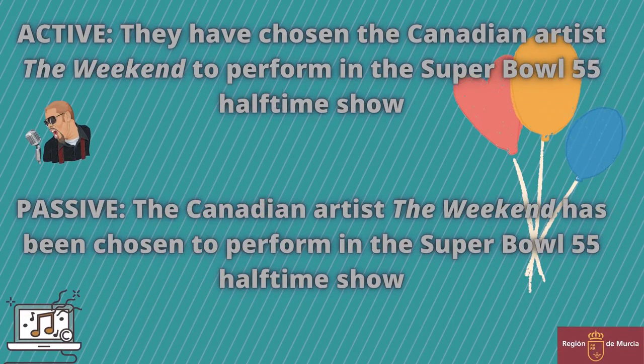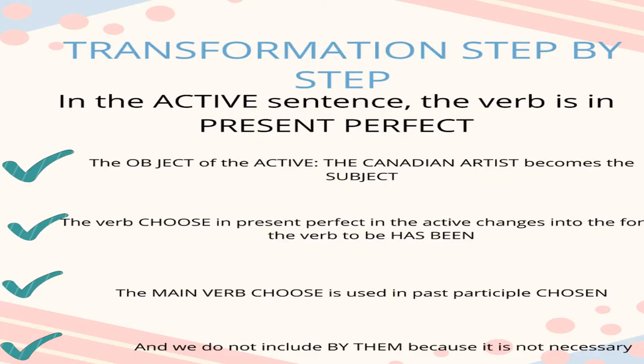'They have chosen the Canadian artist, The Weeknd, to perform in the Super Bowl 55 halftime show' becomes 'The Canadian artist, The Weeknd, has been chosen to perform in the Super Bowl 55 halftime show.' The object 'the Canadian artist' becomes the subject of the passive. The verb 'choose' in present perfect active changes into 'has been,' and the main verb 'choose' is used in past participle: 'chosen.' We do not include 'by them' because it's not necessary.